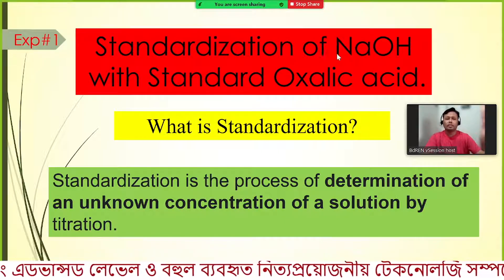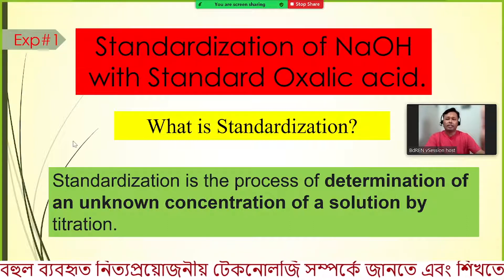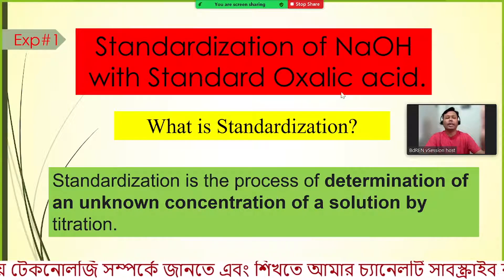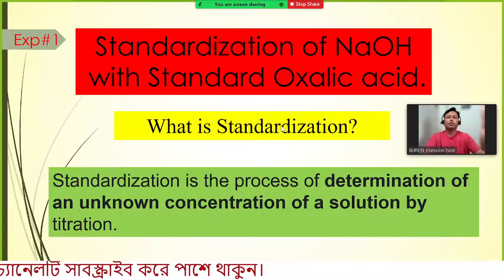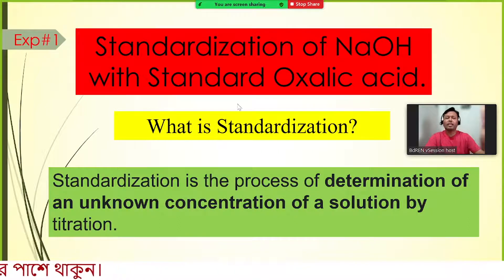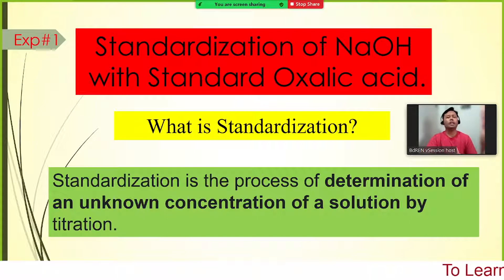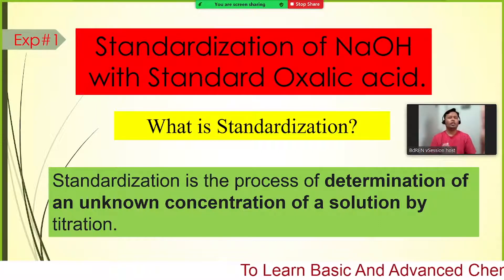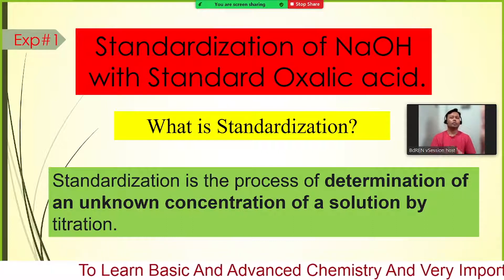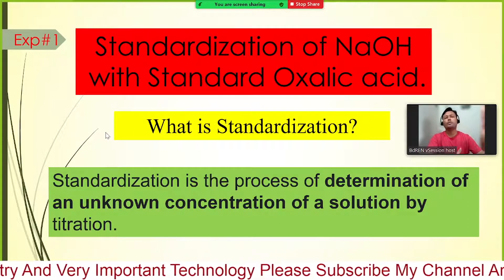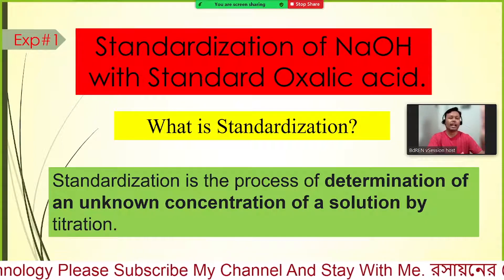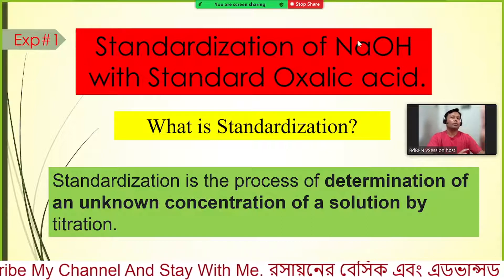Today we are learning about the standardization of sodium hydroxide, which is an example of a strong base, using oxalic acid, which is an organic weak acid. The specific category is: how to determine the concentration of a strong base using a weak acid. This is our target. If you understand this one experiment, you can estimate the concentration of several strong bases using several weak acids.